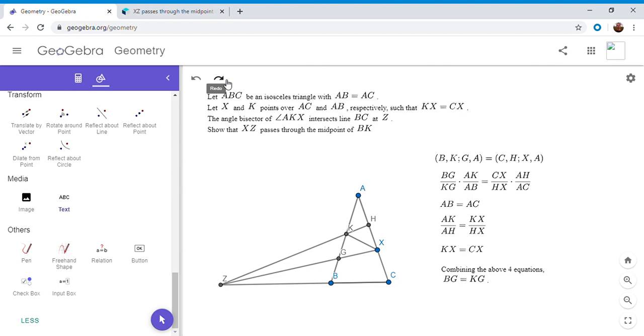AB equals AC, so we can get rid of this AB and this AC. Then AK over AH equals KX over HX, but KX equals CX. If you substitute this KX for CX right here, and then move everything—if you move this AH to this side—then you'd have AK over AH, which would be CX over HX.